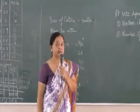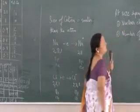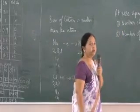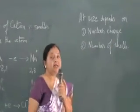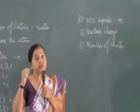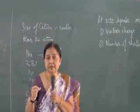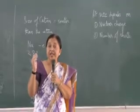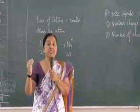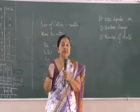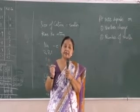Atomic size depends on nuclear charge and number of shells. If the nuclear charge increases, the nucleus becomes more and more powerful — the nuclear charge is increasing — and the shells are drawn towards the nucleus. The outermost shell is pulled towards the nucleus, so the size decreases. Nuclear pull increases and the size decreases.